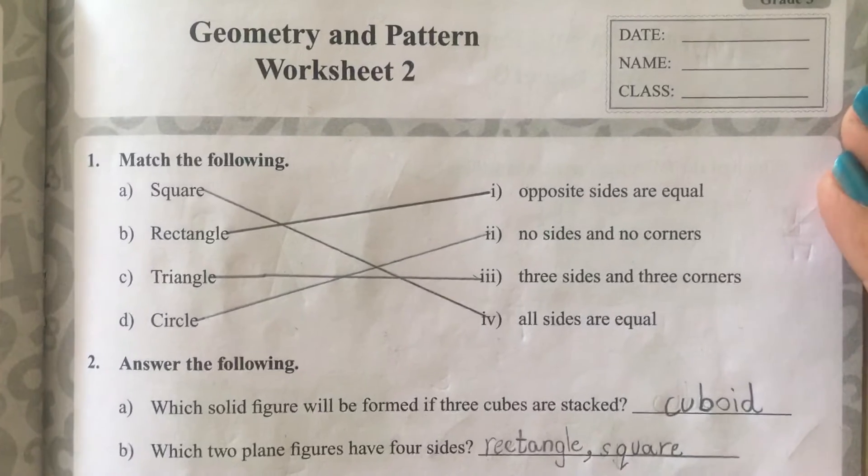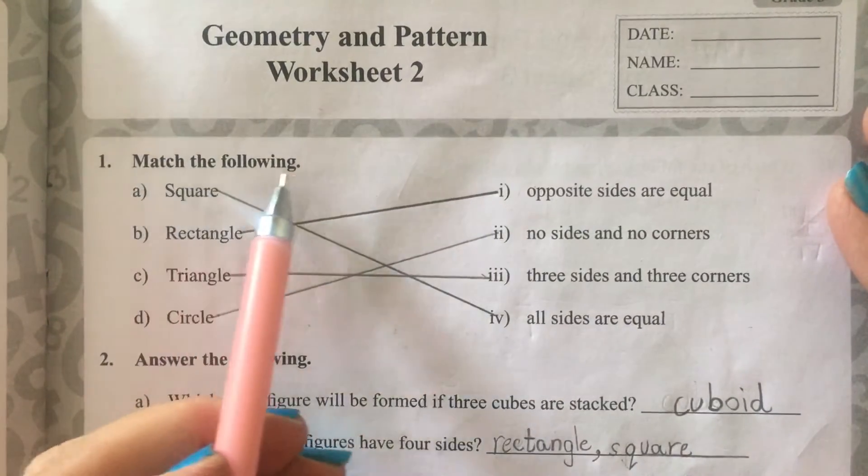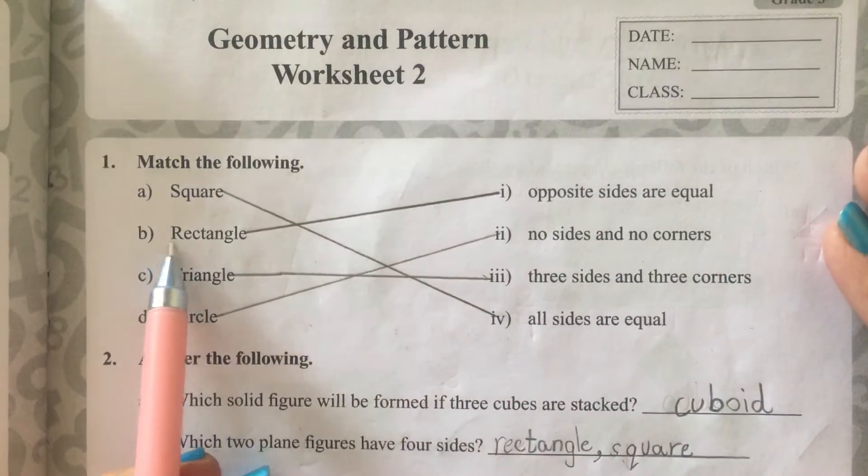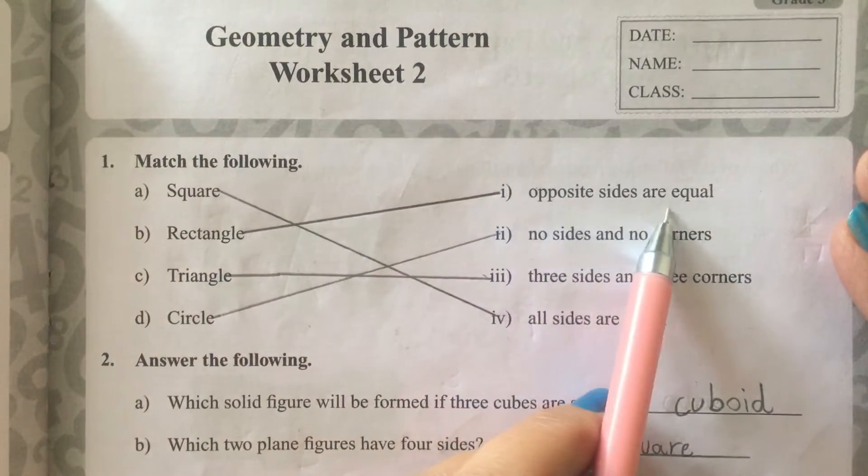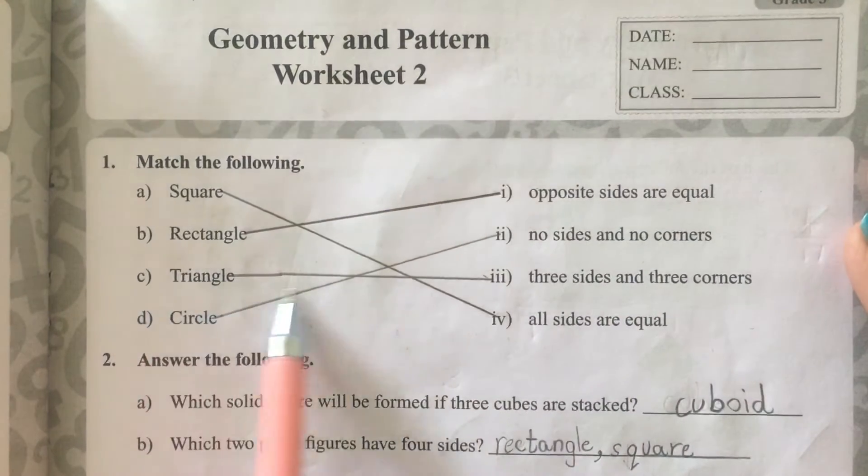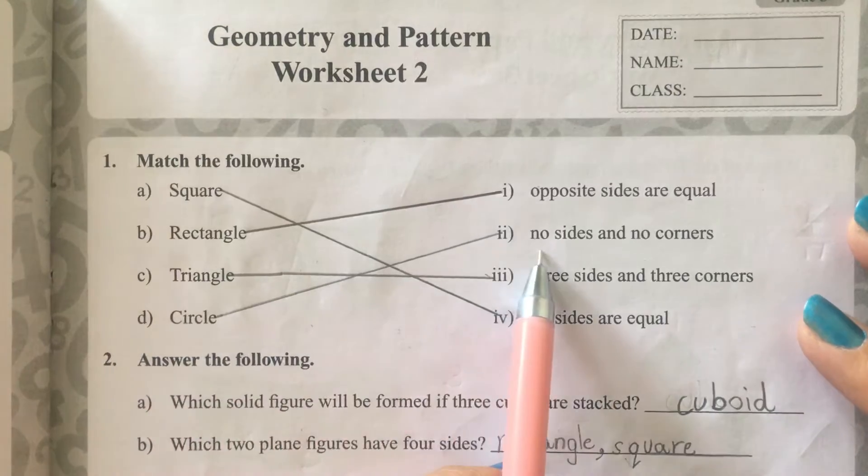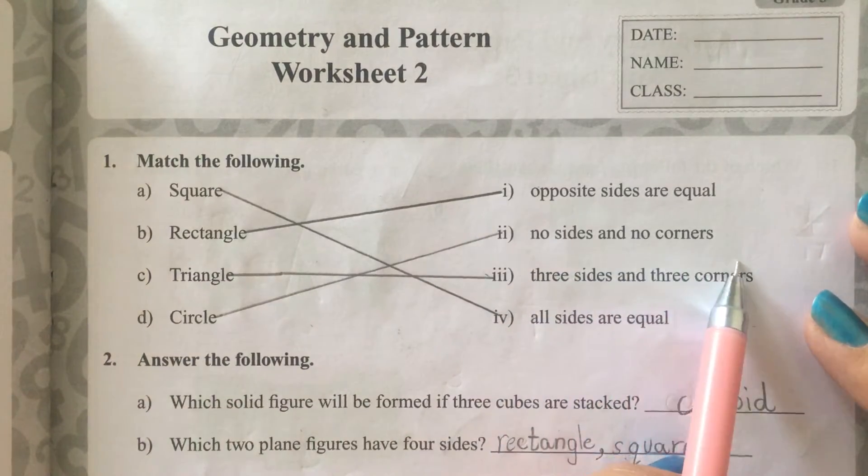Worksheet number 2. 1. Match the following. Square: All sides are equal. Rectangle: Opposite sides are equal. Triangle: Three sides and three corners. Circle: No sides and no corners.